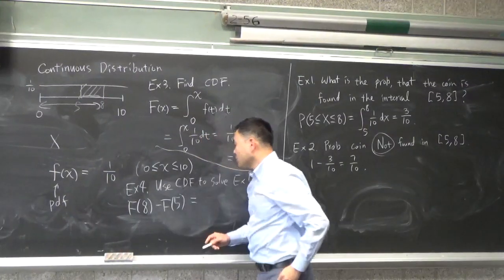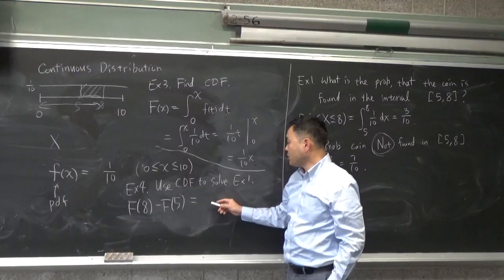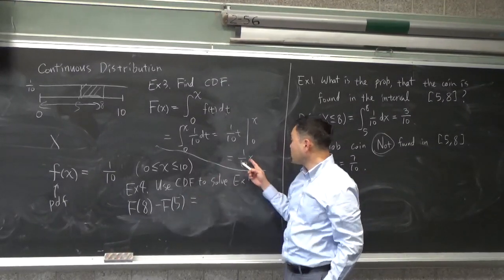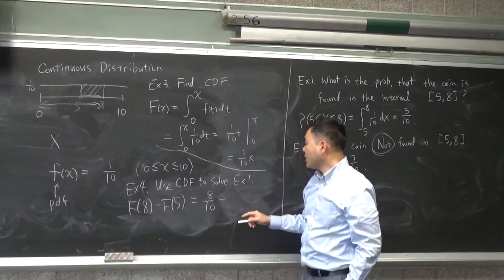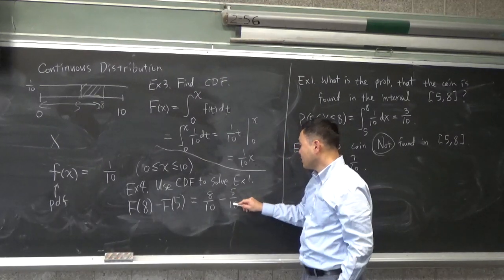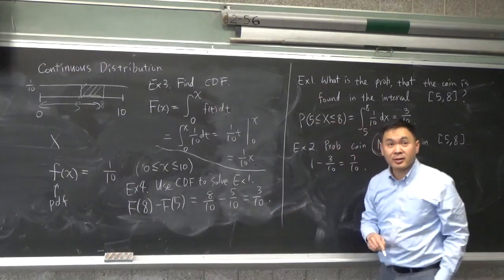So, that gives you probability, which is if I plug in 8 here, that's 8 over 10 minus 5 over 10. So, it's going to be 3 over 10. As you wait.